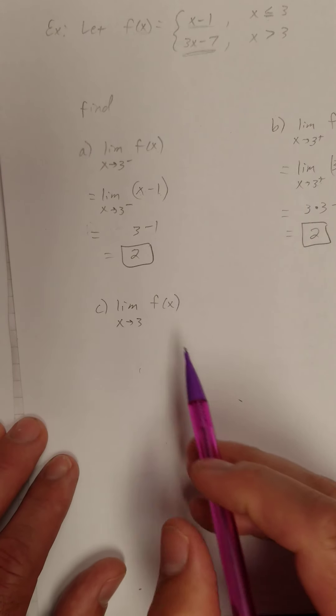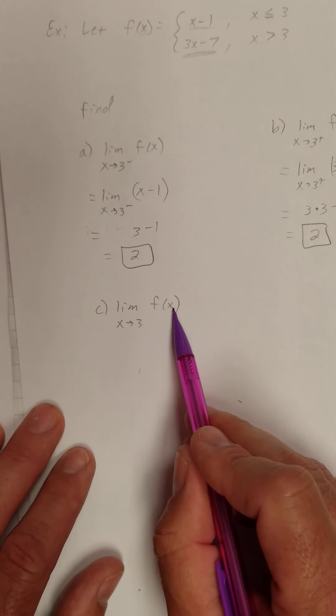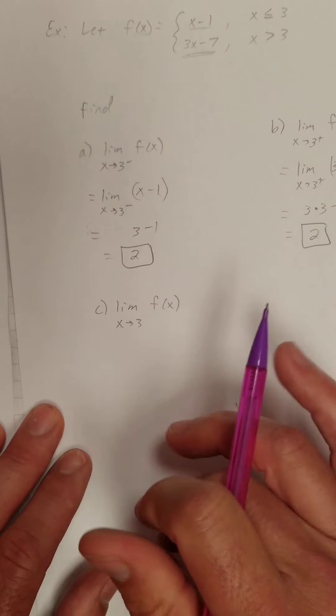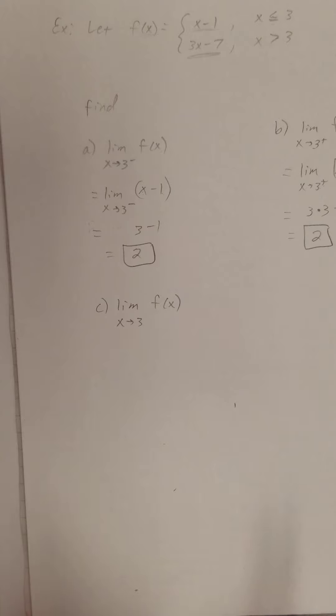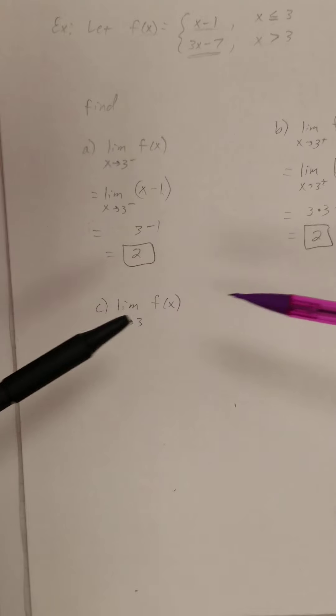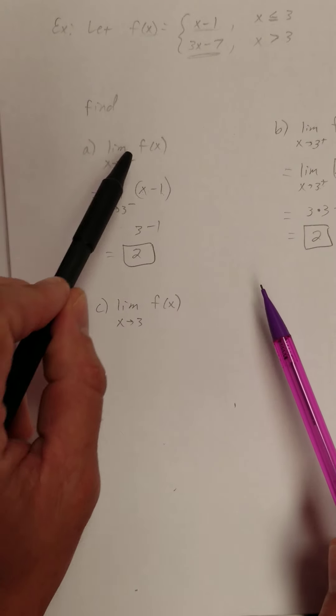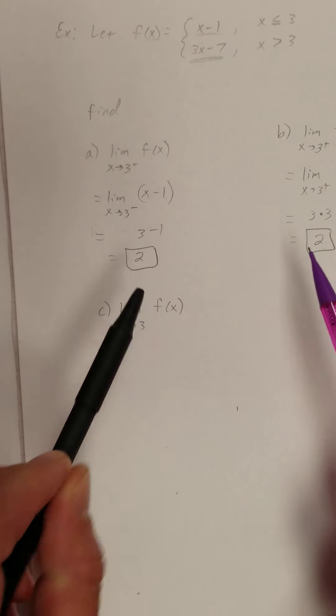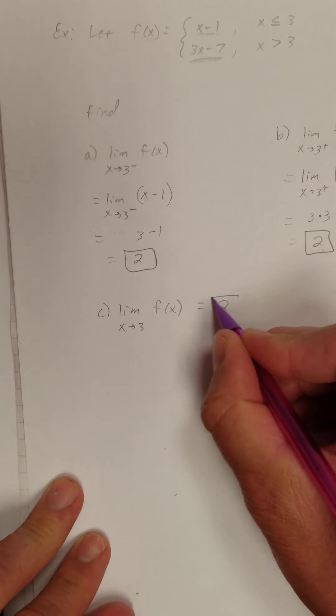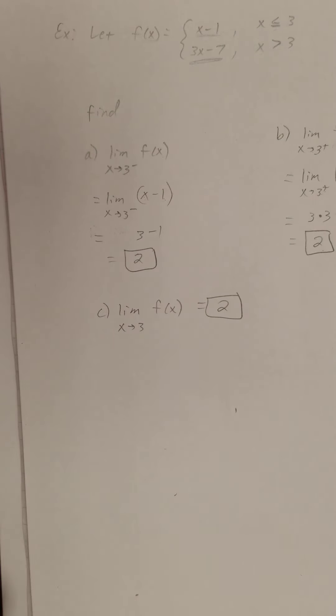So what about this one? The limit as x approaches 3 of f(x). In general, not from the left, not from the right. Well, what do we say in section 1.1? For a limit to exist, yes, the left and the right end limits must approach the same number. Are my left and right end limits approaching the same number? Why, yes they are. So this limit exists and it's at number 2.